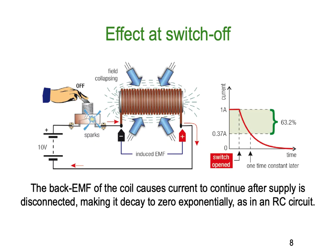Now the switch-off effect — we're doing exactly the opposite. No more current flow, so the magnetic field collapses. As it collapses, a back EMF is induced. The magnetic field is collapsing inward, cutting the inductor, so EMF is produced and current flows for a couple of milliseconds. After dropping 63 percent of the current we're back to one time constant in the opposite direction. The back EMF of the coil causes current to continue flowing after the supply is disconnected, making it decay to zero.